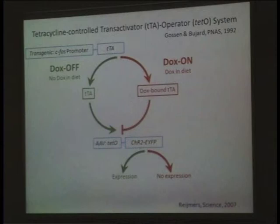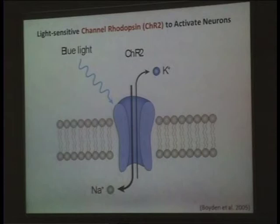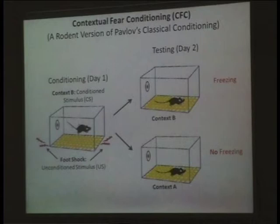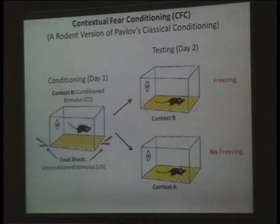The cells activated by the c-fos promoter will be labeled and will start expressing channelrhodopsin. The third tool — channelrhodopsin — confers on cells that express it the ability to be reactivated by light of a specific wavelength, blue light, and thereby help drive behavioral recall. For the behavioral paradigm, we use the well-established contextual fear conditioning, which is a rodent version of Pavlov's classical conditioning.